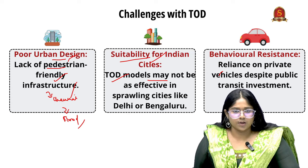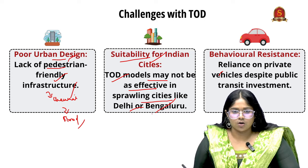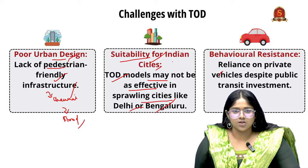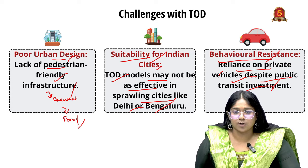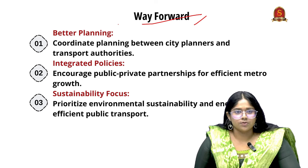Next is suitability for Indian cities — TOD models may not be as effective in sprawling cities like Delhi or Bengaluru as they are in cities like Hong Kong. There needs to be more planning, research, and judicial interpretation for Indian cities. Next is behavioral resistance — reliance on private vehicles despite public transit investment is still a problem, as people still tend to prefer their own vehicle rather than using public transport.